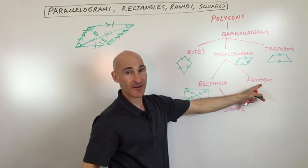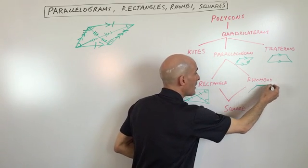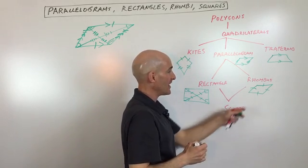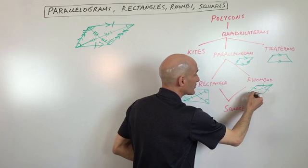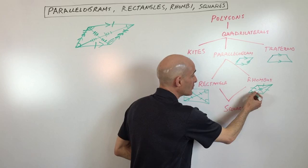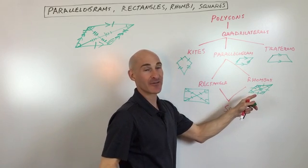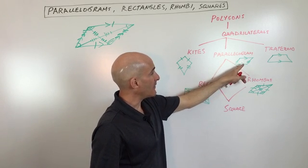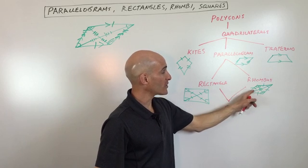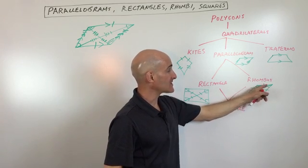Now we're going to talk about rhombi, or rhombuses. A rhombus is a parallelogram, it is a quadrilateral, it is a polygon. A rhombus kind of looks like a diamond shape and has four congruent sides — all four sides are congruent. The diagonals are perpendicular to one another, forming 90-degree angles. And one more thing: the diagonals bisect the opposite angles — they cut those angles exactly in half.